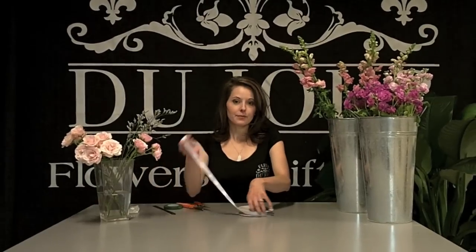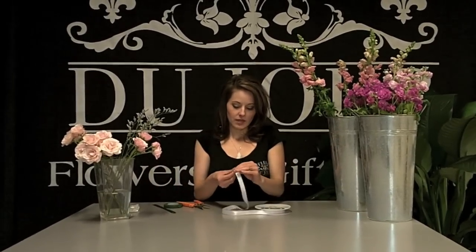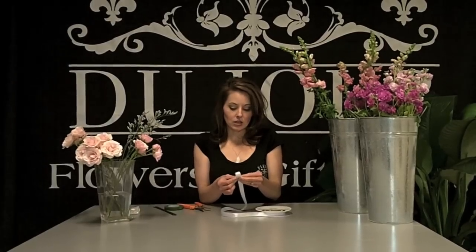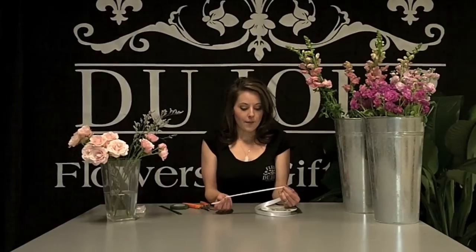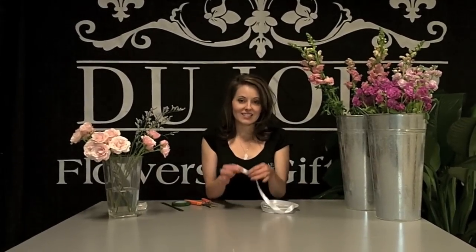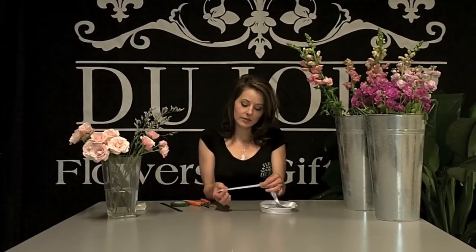I'm going to use Double Face Satin No. 3. This is probably the most challenging part of the project. Once you conquer this, you can pretty much use this technique and make anything. Double Face Satin No. 3, you can use any size. This is the most typical size that you would use for a corsage.